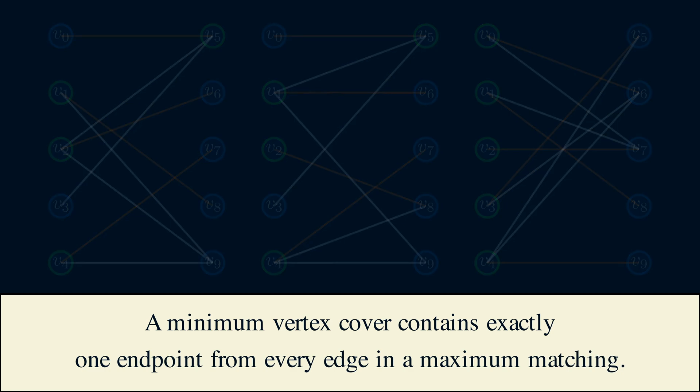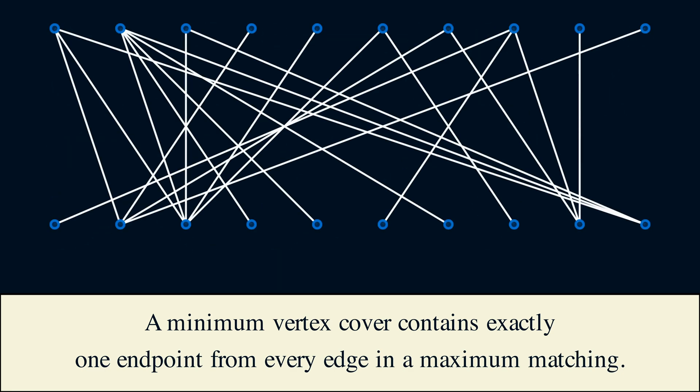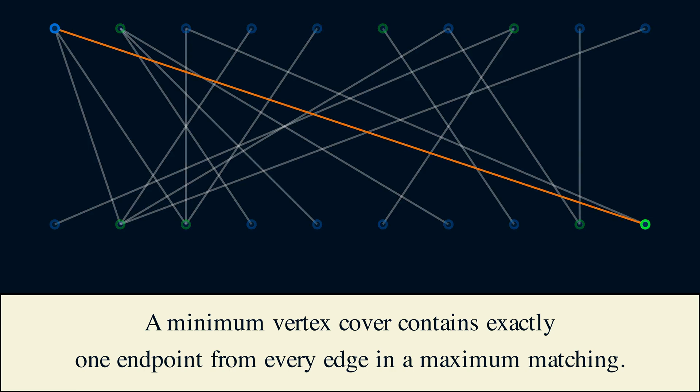We can also switch it around. Suppose we're given this graph, and we're told that this is a minimum vertex cover. To find a maximum matching, we know that it can't have both endpoints in the vertex cover, so we can ignore those edges. Then, there exists a maximum matching within this remaining graph. So knowing the minimum vertex cover is going to remove some edges, and is going to simplify the search for a maximum matching. We're going to use a similar idea when we move on to graphs with edge weights.